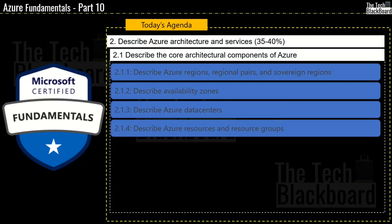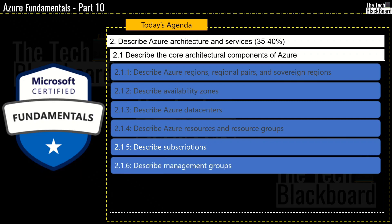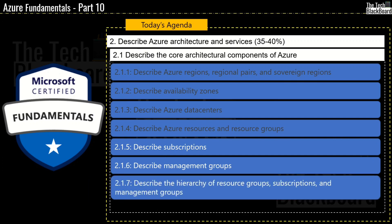That was all for today. We covered a lot of ground: we started with understanding Azure subscriptions — what they are, why they are needed, and key facts about them. We then described Azure management groups, and finally explained the hierarchy of resource groups, subscriptions, and management groups. Hopefully this makes clear how all these components come together to provide tools you need throughout your Azure journey to efficiently manage Azure resources, subscriptions, management groups, access, policies, compliance, and more.